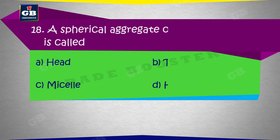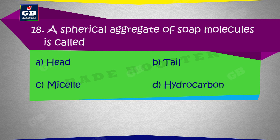A spherical aggregate of soap molecules is called — soap ke molecules ka ek spherical aggregate ko kaha jaata hai: a) Head, b) Tail, c) Micelle, d) Hydrocarbon.